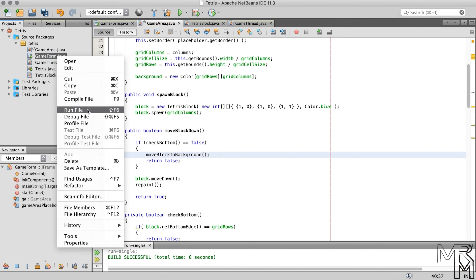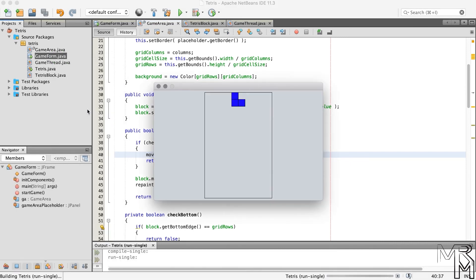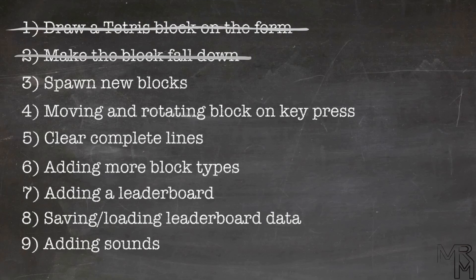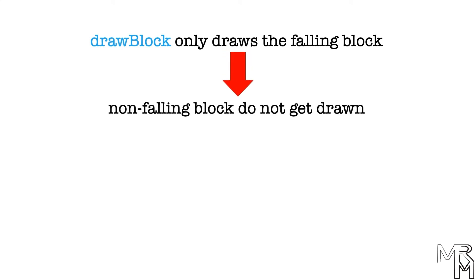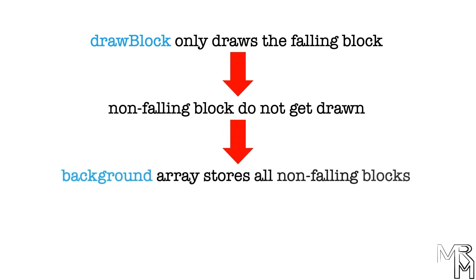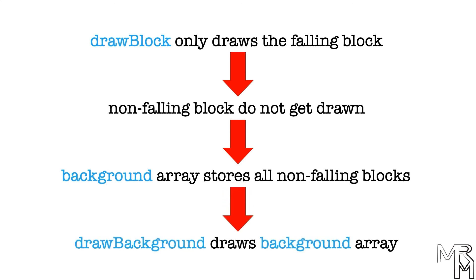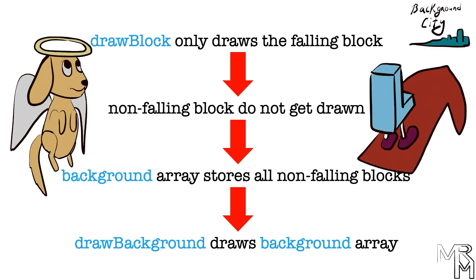If we run our game now, we'll see that the block doesn't disappear after it stops falling, and our program gets more and more Tetris-like. Step 3 complete! To summarize: because the drawBlock method only draws the currently falling block, all previous blocks were not drawn. To fix this, we added an array of Color arrays to the GameArea class to represent the background, drawn by the drawBackground method. Just like all dogs go to heaven, all blocks eventually go to the background array.